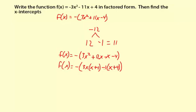And if I were to distribute this back, -1 times x makes -x. -1 times 4 makes -4. So that would take you back to where you were in the previous step.